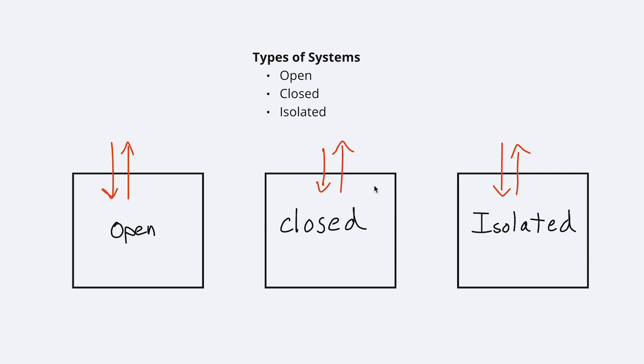A system is a term that we give local environments, and whatever we decide to define as a system is pretty much up to us. You could choose the human body to be a system, a house, or the earth. Within that system you have all kinds of chemical interactions and processes. We use these three terms to describe the behaviors and characteristics of different types of systems.